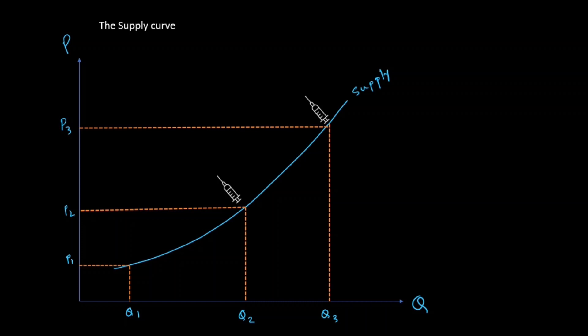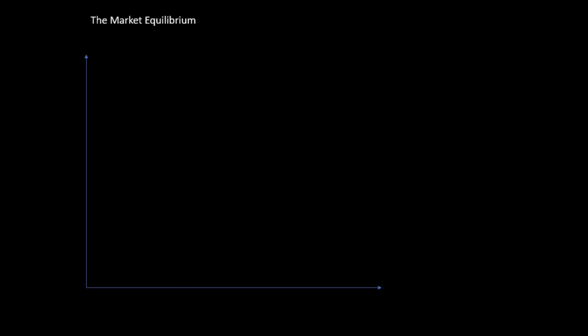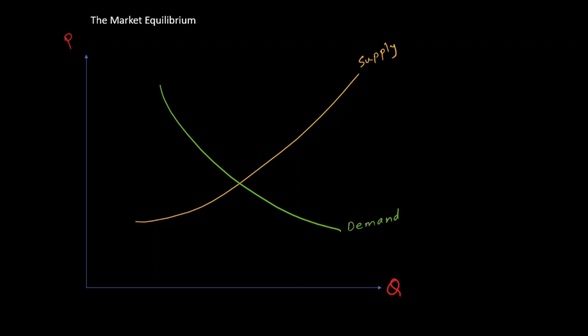At equilibrium, the quantity demanded equals the quantity supplied at a single market price called the equilibrium price. Coming back to the graph: the x-axis has quantity and the y-axis has price. The supply curve is upward sloping and the demand curve is downward sloping, and there is one common point of intersection between them. At this equilibrium point, the equilibrium quantity is where quantity demanded exactly equals quantity supplied, and this occurs at an equilibrium price of PE. At this point we can say the market is in equilibrium.